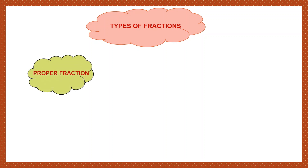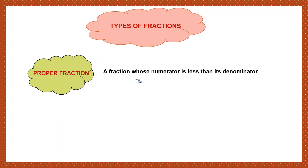First one, we have the proper fraction. What are proper fractions? A fraction whose numerator is less than its denominator. Now, let's take some examples and see. If I have a fraction with numerator 3 and denominator 7, this is a proper fraction because the numerator 3 is less than its denominator 7.